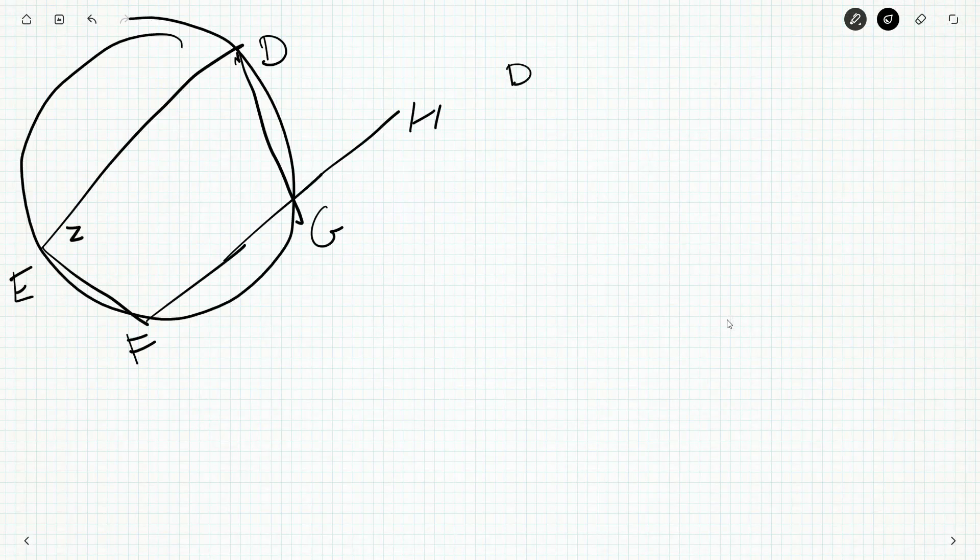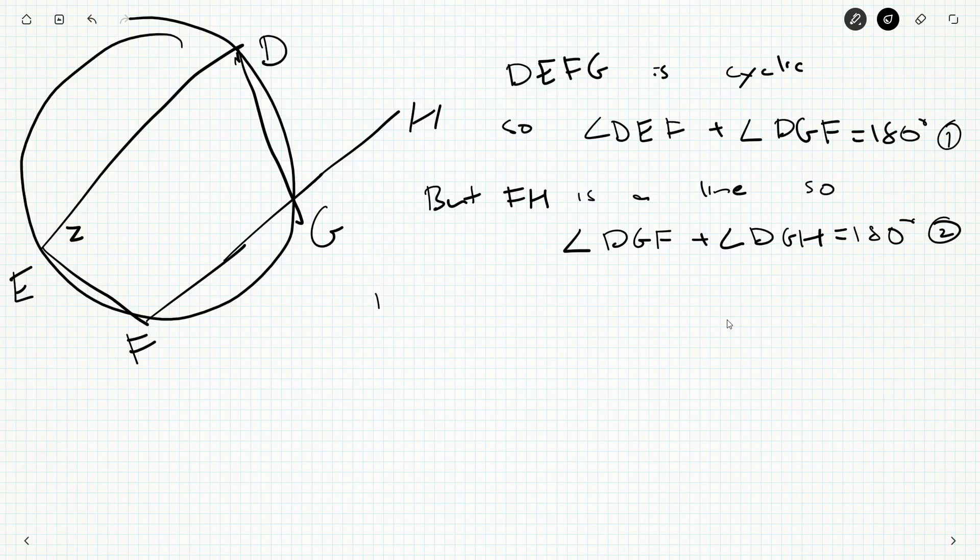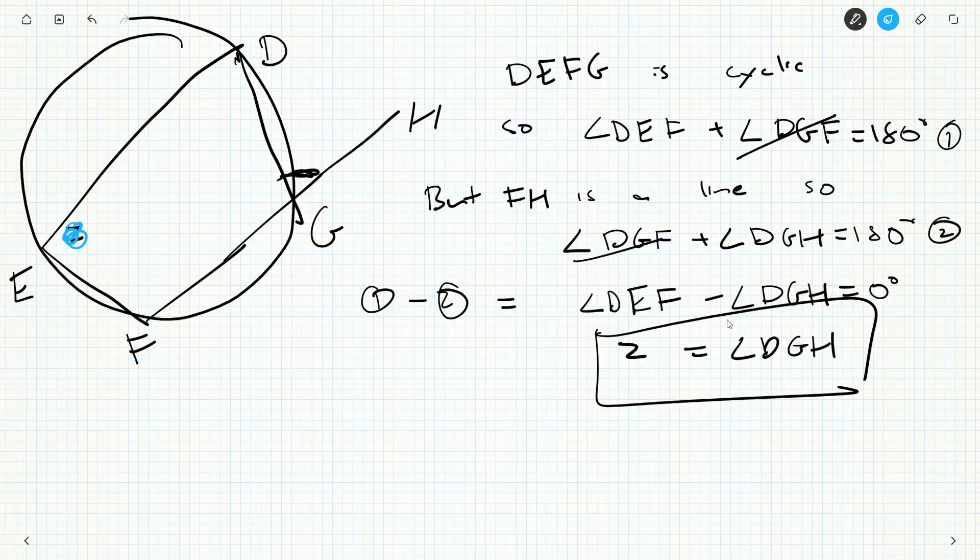So H, D, E, F, G. We know this fellow over here is z. Let's write this up. DEFG is cyclic, so angle DEF which is z plus angle DGF equals 180 degrees. But FH is a straight line, so angle DGF plus angle DGH equals 180 degrees. Take equation one minus equation two, we get angle DEF minus angle DGH equals zero degrees because the DGF's cancel out. But this is z and this is DGH, so we're done. Z equals angle DGH. It's the exact same angle.